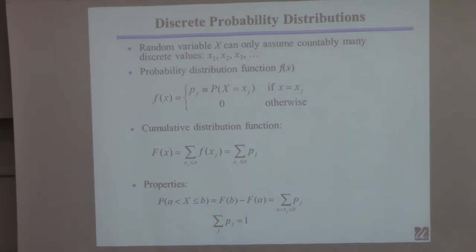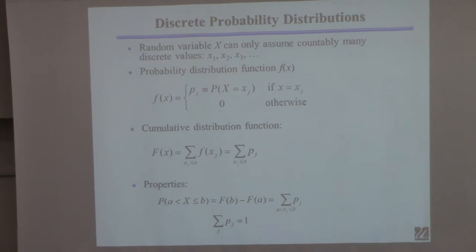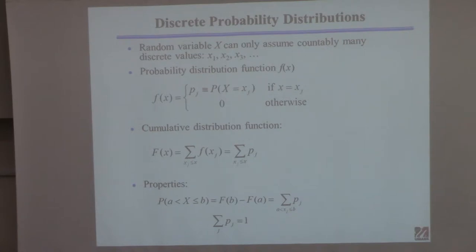There's the probability density function of rolling a die. What's the probability of rolling one-half? Zero — you can't roll one-half on a die. You can roll a one, two, three, four, five, or six, and they're all equally likely. The probability of each is one-sixth, because those have to add up to one. When you see things like this mathematical definition, it's helpful to translate it into a picture. The function equals p_j if x equals x_j, and zero otherwise.